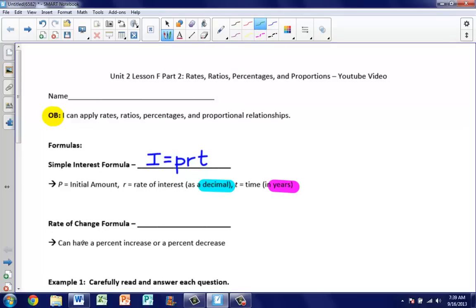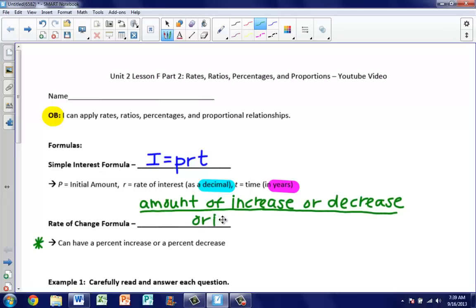Your second formula is your rate of change formula, and this is going to be new. What is important is we can have a percent change of increase or decrease. Our formula has a numerator and a denominator. In your numerator, this is going to be your amount of increase or decrease. In your denominator, you're always going to have your original amount, the amount that you start with. This formula will make more sense when we actually get into solving problems.